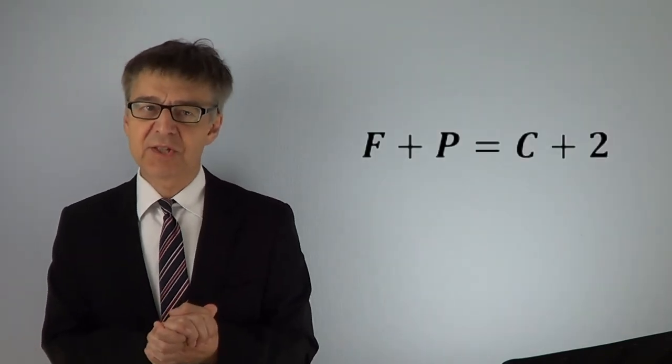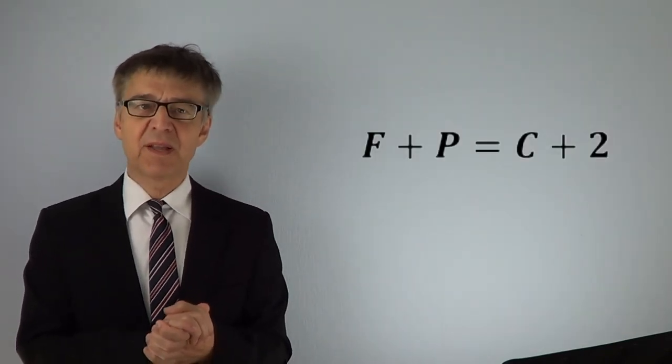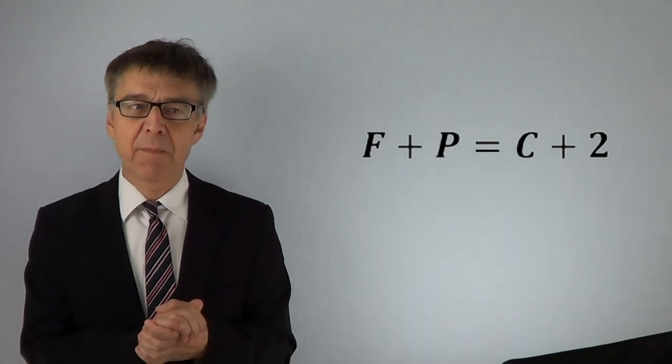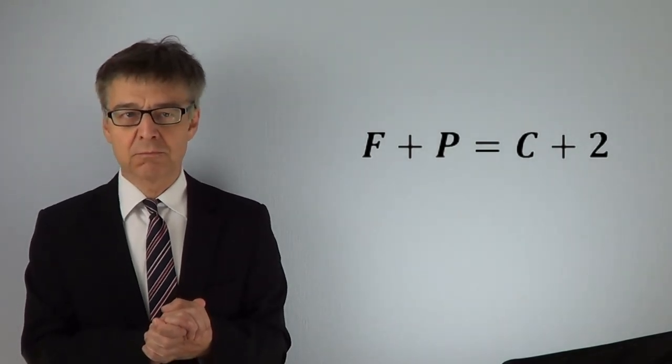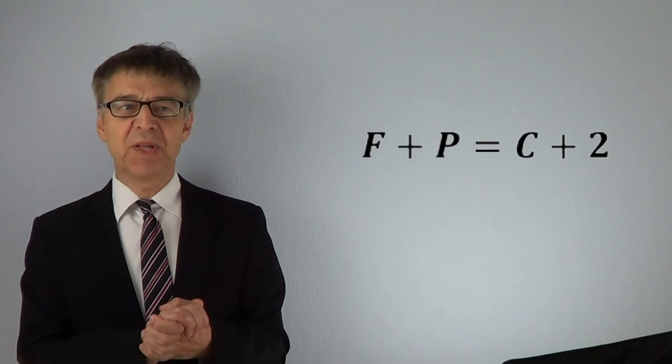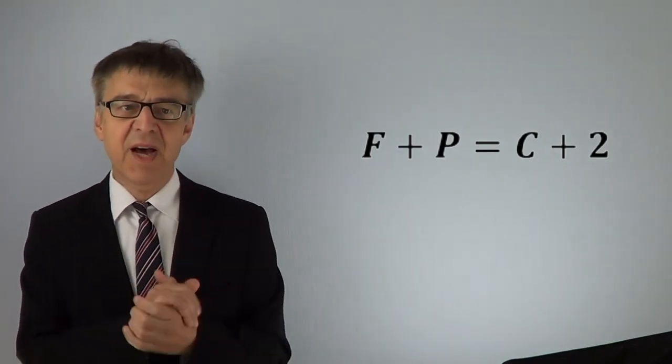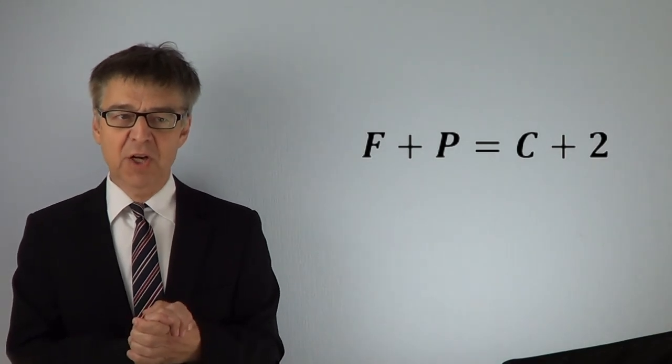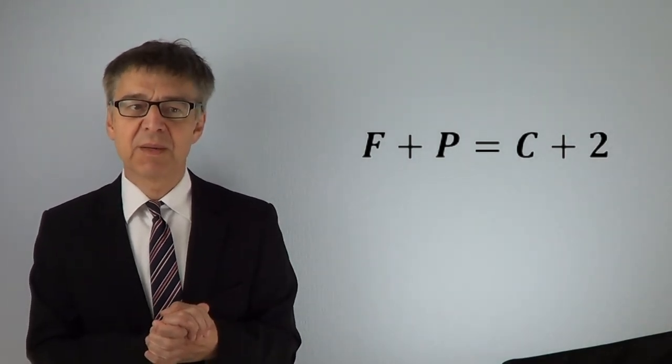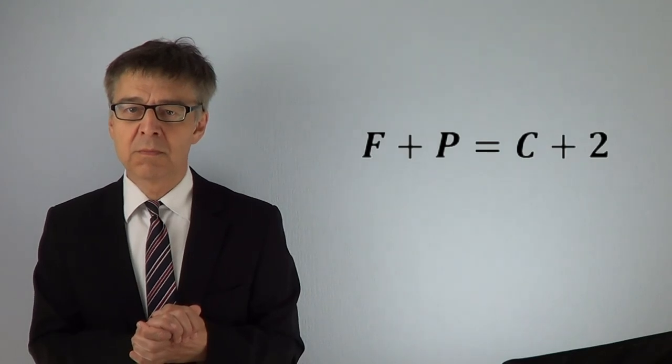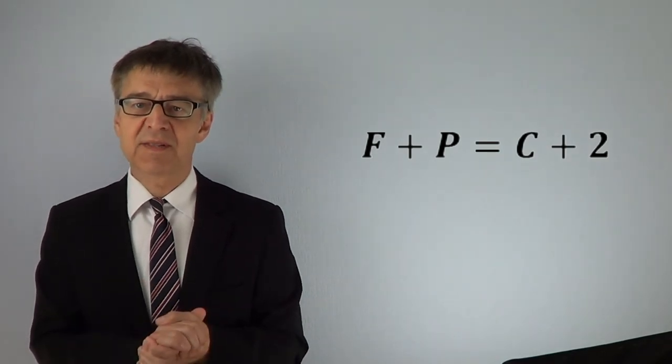Let's do a summary of today's lecture. Physical chemistry has the task of describing many-body systems. For a full description, we need the number of components, the number of phases, and the defined number of state variables, which can be calculated as F from Gibbs phase rule. Thanks for watching. See you next time.